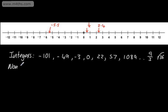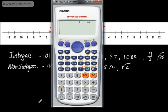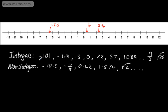If we now look at some examples of non-integers, we can have decimals and fractions. We might have negative 10.2, negative 7 eighths, 0.42, 1.674. We might also have numbers such as the square root of 2, which is about 1.4. If we look at that on the calculator, root 2 gives us 1.414 and so on. These are all examples of non-integers.